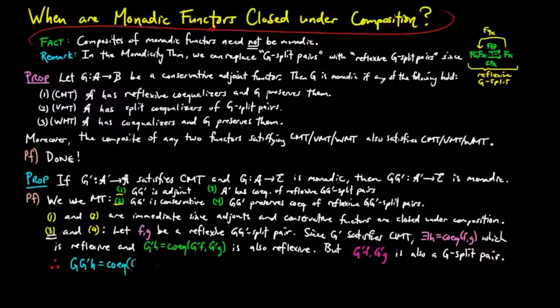Therefore, g, g' h is equal to the co-equalizer of g, g' f, g, g' g, since g is monadic. Thus, g, g' is monadic, which completes the proof.